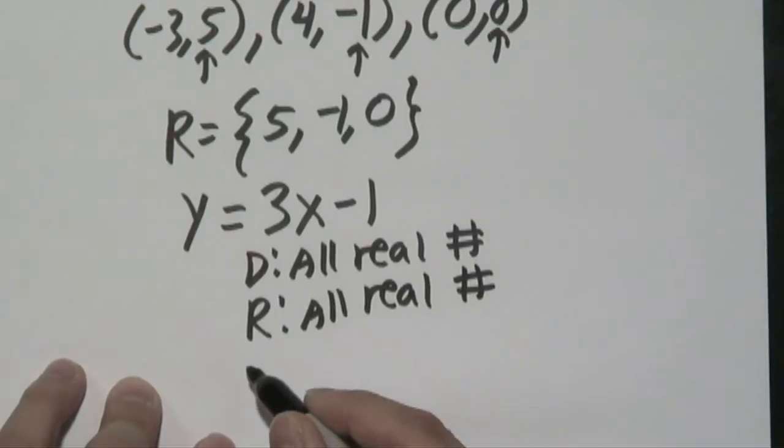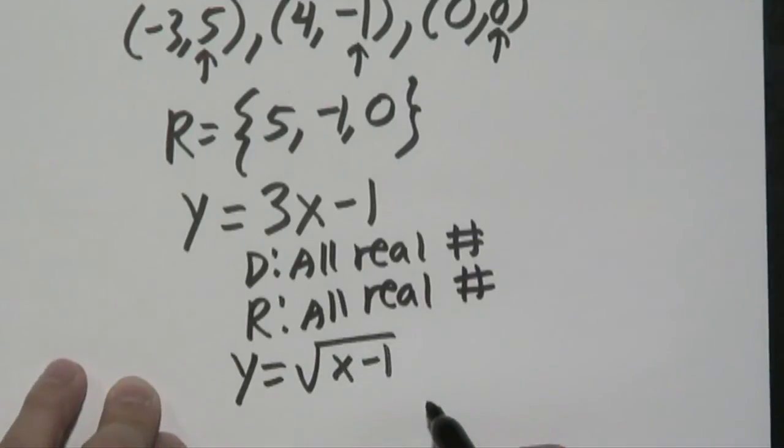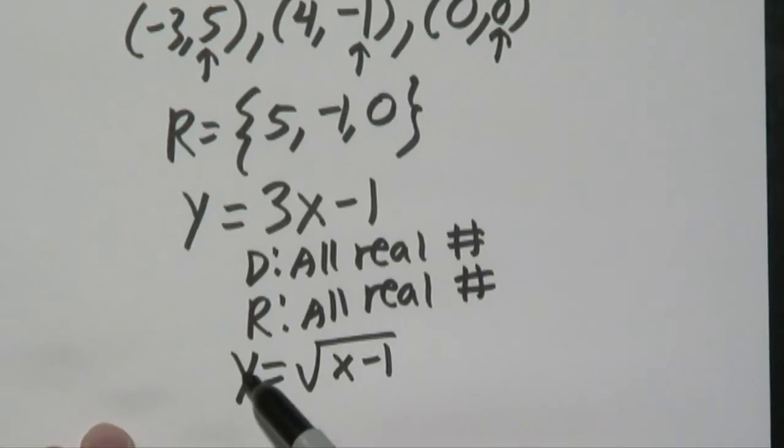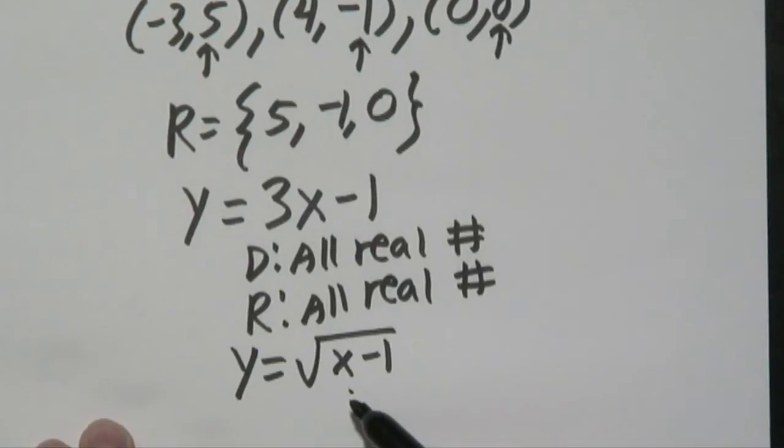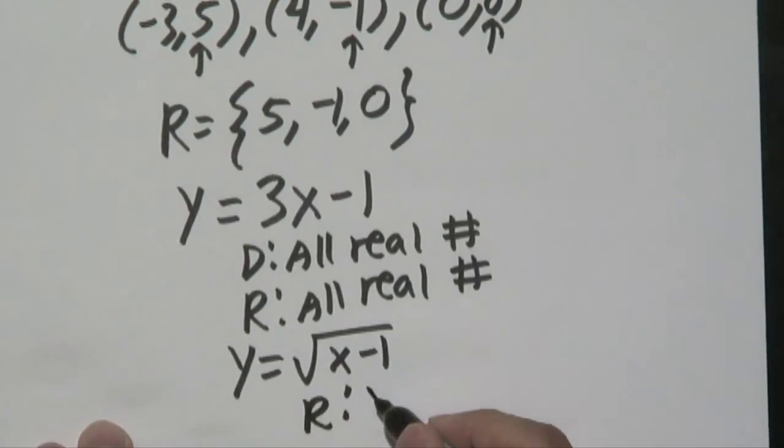One more example: if you have the function y = √(x - 1). Let's talk about what y can be for the range. Because this is a square root, one thing you know about square roots is that square roots have to be positive or the number is 0. So that means in this particular case, for the range, the y has to be ≥ 0 because you cannot have a square root of a negative number. That's not going to be a real number.